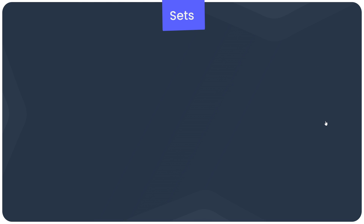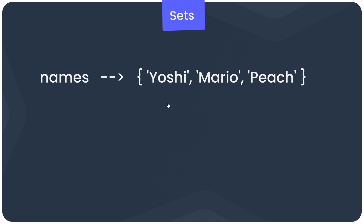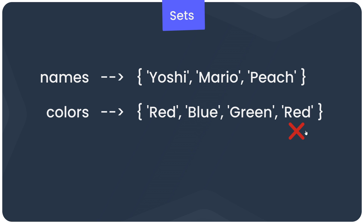The next data type to talk about is sets. Sets in Redis are an unordered collection of strings which all have to be unique, so you can't store duplicate strings in a set. Sets could be useful for storing all of the users currently online, tracking blocked IP addresses, or making sure certain values like article titles are unique. In all these cases we wouldn't want duplicate values stored.